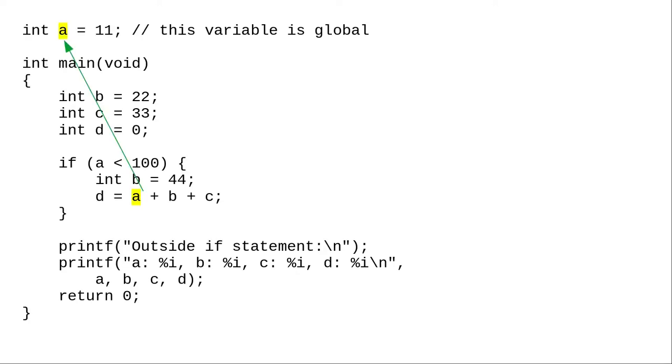For example, when looking for variable A here, you look upwards through all the open braces and find it at the global scope.